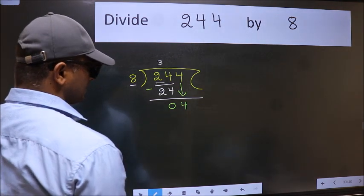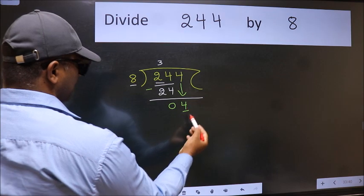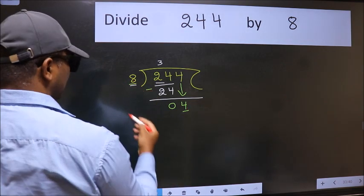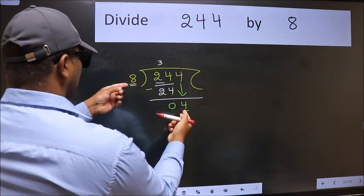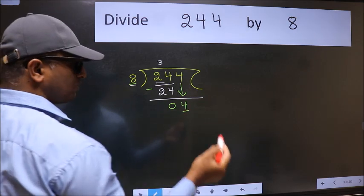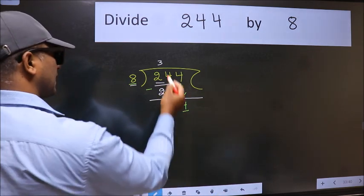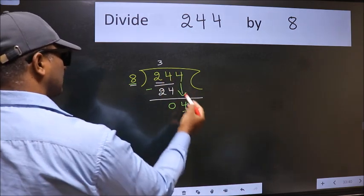And the mistake is this. Here we have 4 and here 8. 4 is smaller than 8. So what many do is they directly put dot, take 0.